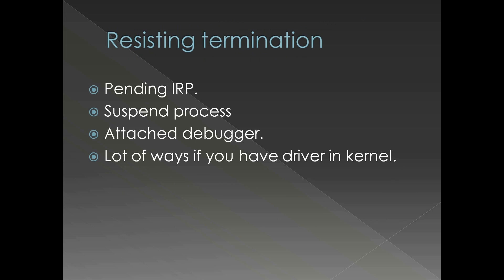How can a process resist termination, even from Task Manager? A couple of ways: a pending IRP — if an I/O is pending on a thread, the kernel won't terminate that thread. Suspending a process — even TerminateProcess needs some code execution inside the process address space to terminate, so suspending prevents that, not allowing anyone to execute code in the address space. Attaching a debugger works similarly — if a debugger is attached, you cannot terminate a process because the debugger won't let anyone else execute code in the process address space. If you have a driver, you have many ways to resist process termination.